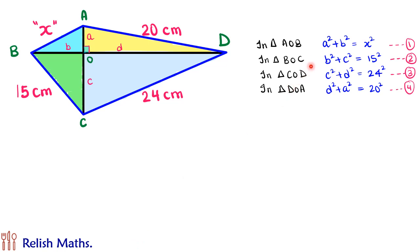Now if you observe, equation 1 and result 3, if we add them, we will get a² + b² + c² + d² = x² + 24².